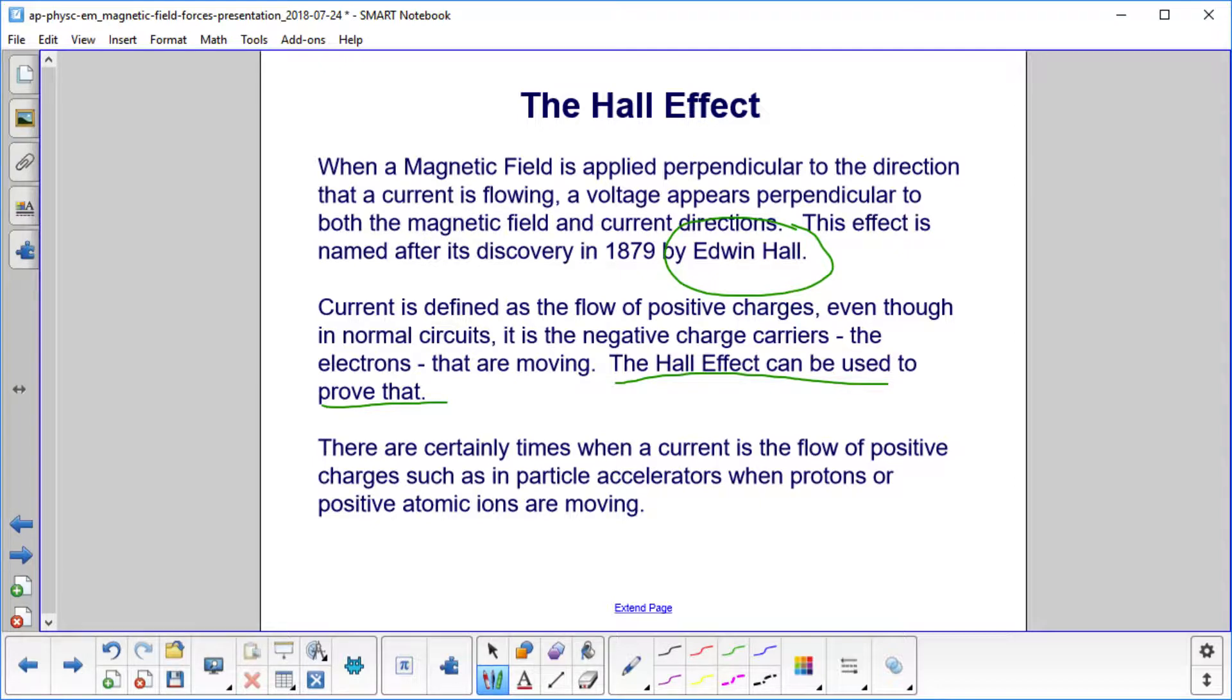There are certainly times when a current is a flow of positive charges. If you have particle accelerators and you're accelerating protons or positive atomic ions, then your current flow would actually be the flow of positive charges.